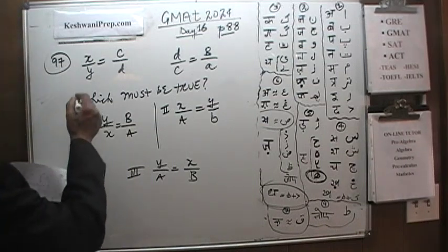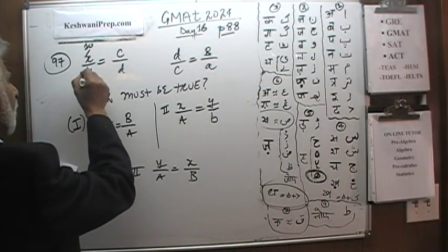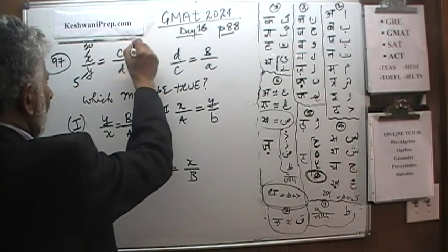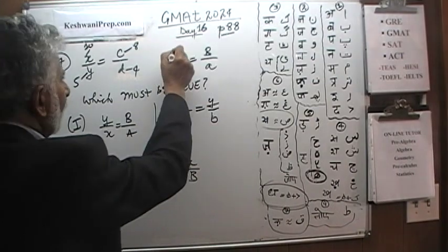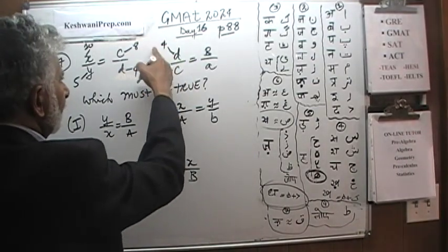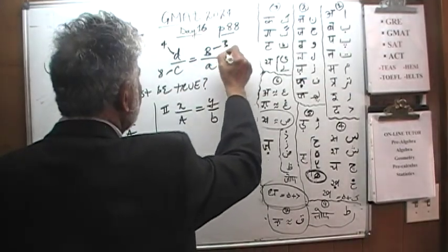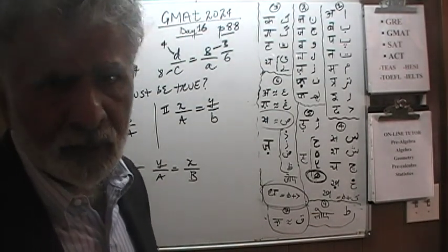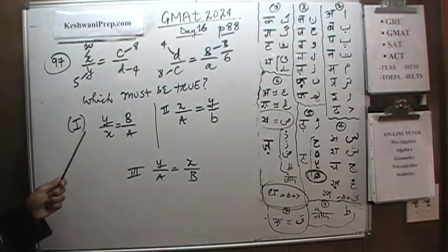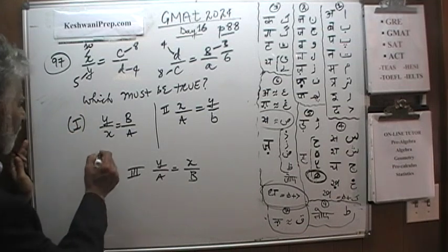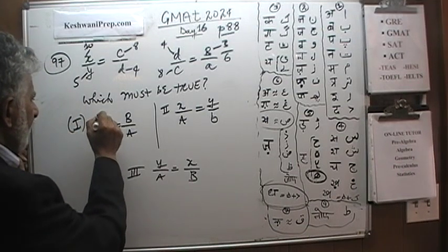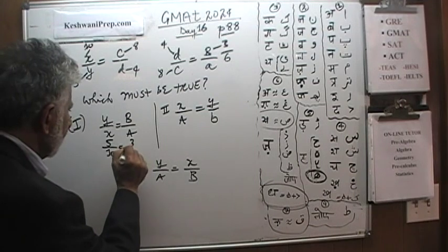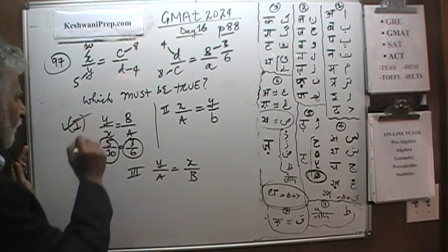Let's say x equals 10 and y equals 5, making x over y equal to 2. We need c over d to also equal 2, so let's use c equals 8 and d equals 4, giving 8 over 4 equals 2. Then d over c equals one-half, so b over a must equal one-half — let's use b equals 3 and a equals 6. Now test statement 1: y over x is 5 over 10, and b over a is 3 over 6. Both equal one-half — statement 1 works.